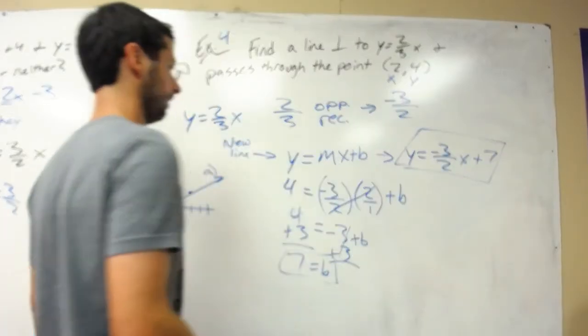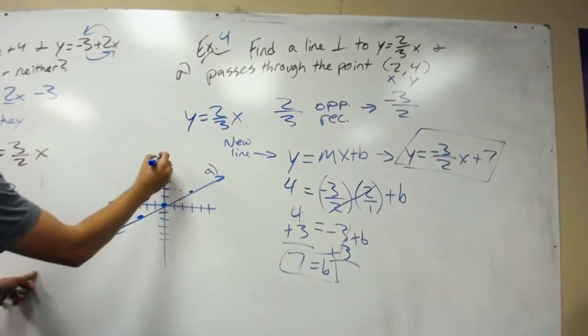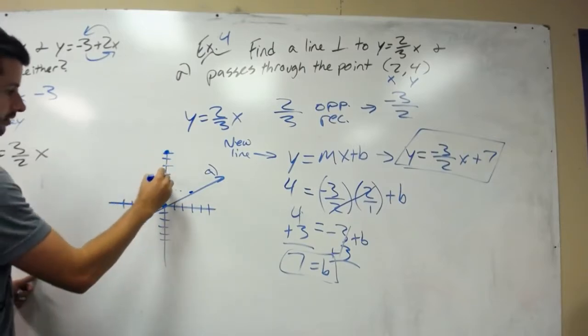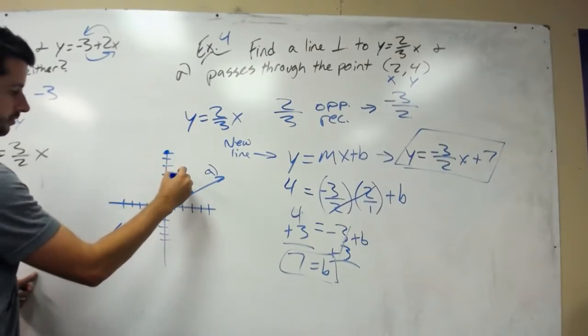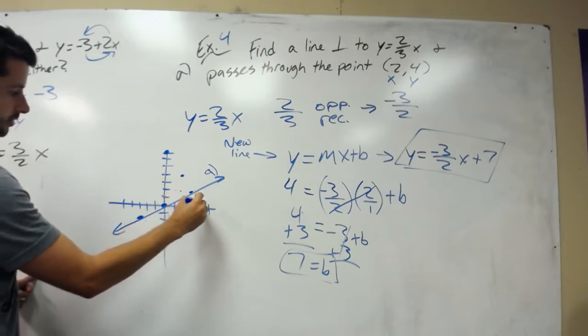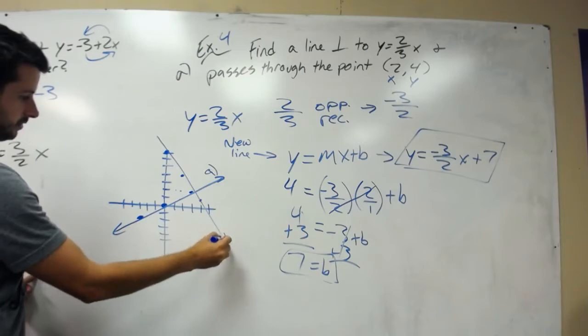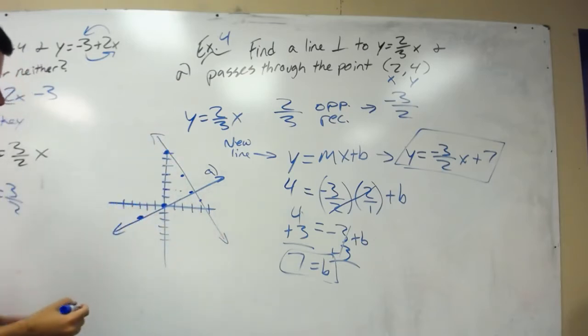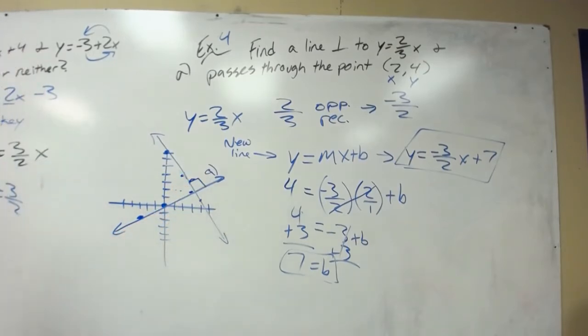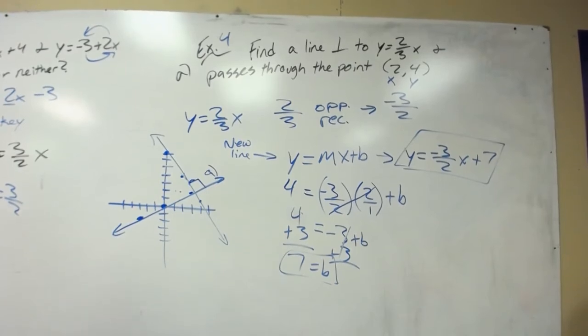Now when I graph that, I go up to 7, and I go down 3 over 2, down 1, 2, 3, over 2. Our line looks somewhat like that. It creates perpendicular lines, 90 degrees. That is how you solve for graphing a line perpendicular or parallel to a given line.